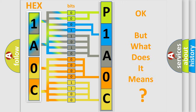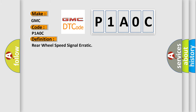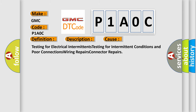The number itself does not make sense to us if we cannot assign information about what it actually expresses. So, what does the Diagnostic Trouble Code P1A0C interpret specifically for GMC car manufacturers? The basic definition is: Rear wheel speed signal erratic. This code sets when the ignition is on and the vehicle speed is greater than 32 km/h (20 mph) when the brake is applied, or 19 km/h (12 mph) when the brake is released. This diagnostic error occurs most often in these cases: testing for electrical intermittents, testing for intermittent conditions and poor connections, wiring repairs, and connector repairs. The Airbag Reset website aims to provide information in 52 languages.